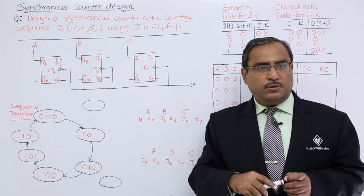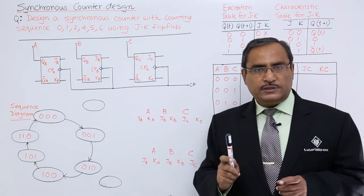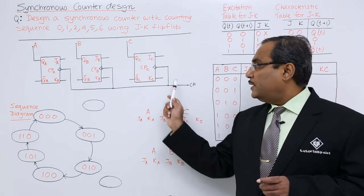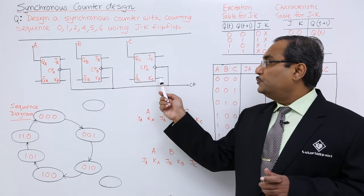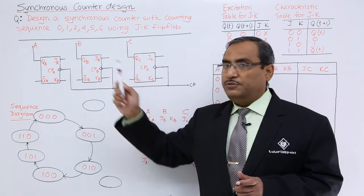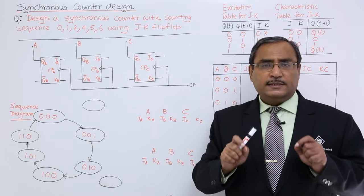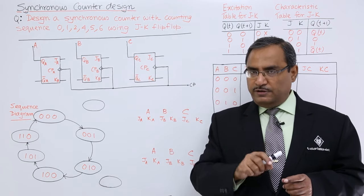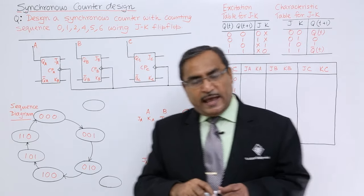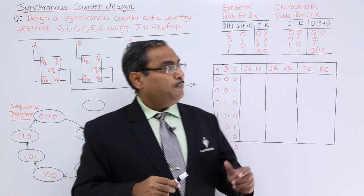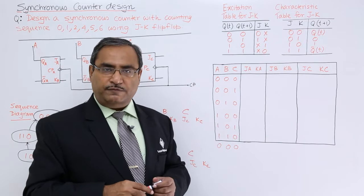As it is a synchronous counter, all the flip-flops will have the same clock pulse source with the same frequency and time period, so I have made these connections accordingly. In the counter design we need to get J and K connections for the 3 flip-flops — that means 6 such connections in total. Since we are using JK flip-flops, I have drawn the excitation table and the characteristic table of the JK flip-flop.